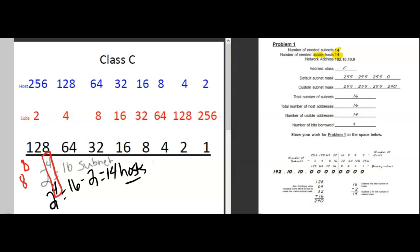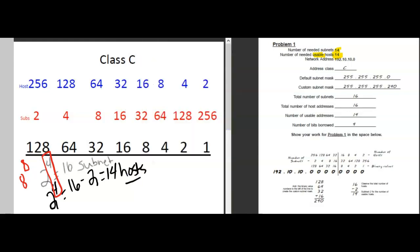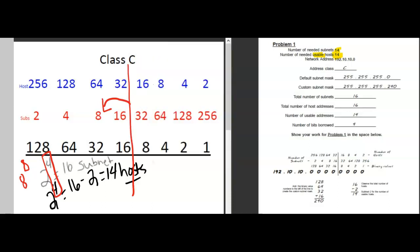So again you can either use the great divide method. If I want to make 14 and 14 remember anything to the left of the line is the subnet. Anything to the right of the great divide line is your hosts. You always have to subtract 2 which gives you 14. So I have 16 total subnets.